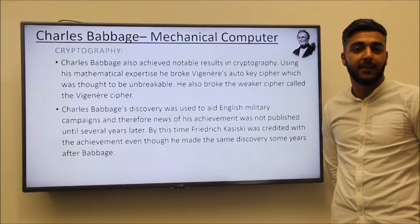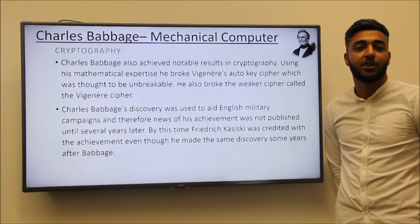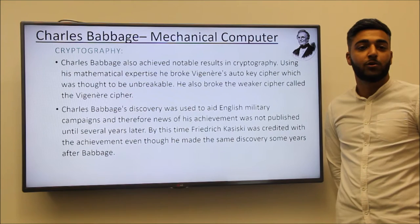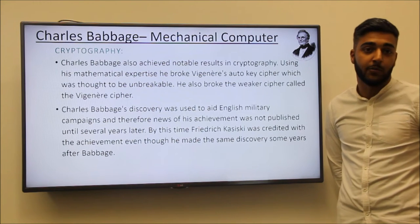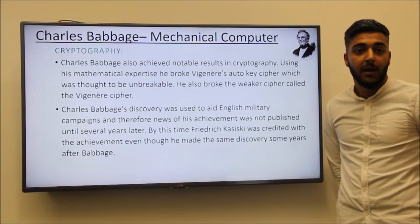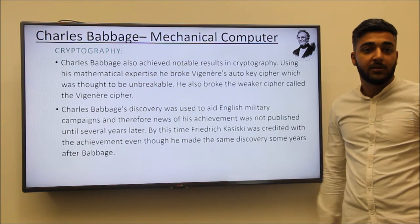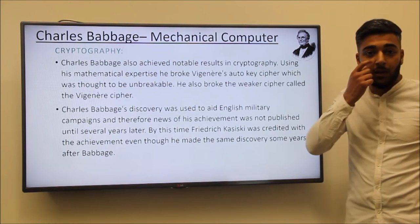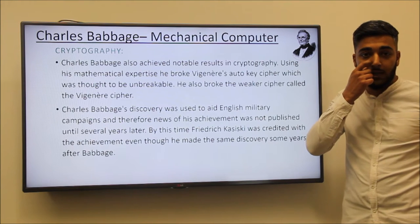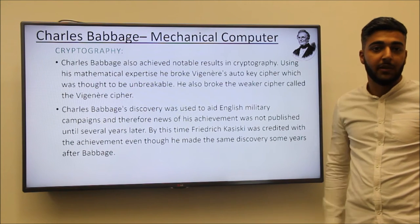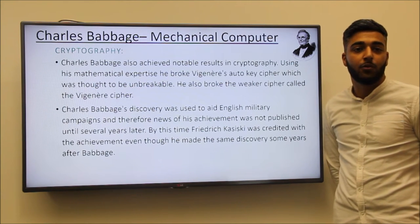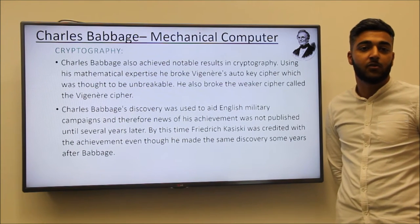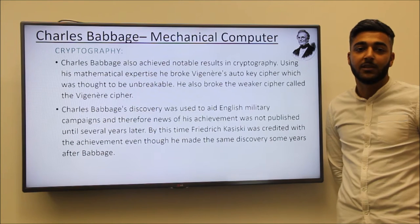In 1837, Charles proposed the first general mechanical computer, the Analytical Engine, which contained an ALU known as the arithmetic logic unit, basic flow control and punch cards. These were inspired by the Jacquard Loom, and integrated memory made it the first general purpose computer concept. Charles also achieved amazing results in cryptography using his mathematical expertise. He did break a cipher which was thought to be unbreakable, and his achievements were used in English military campaigns and were not published until several years later.